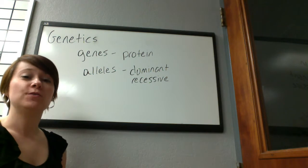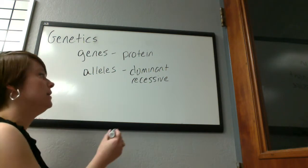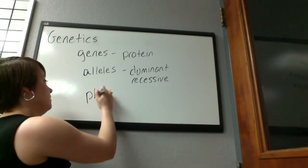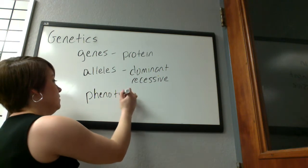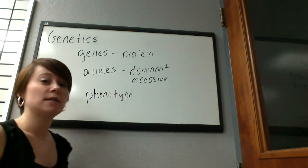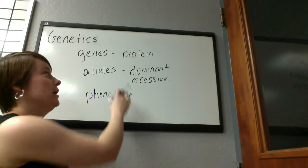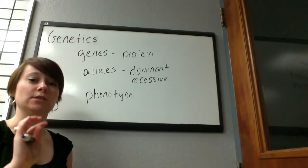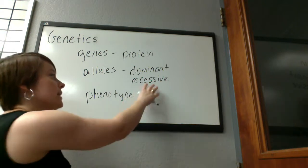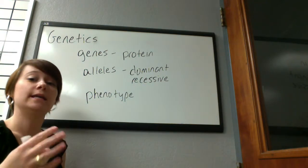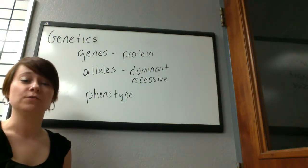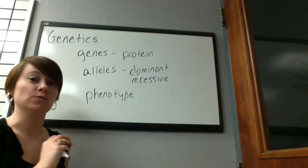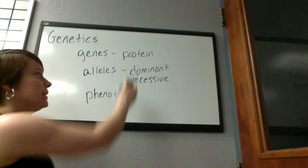When you look at a person — when you're looking at the physical characteristics of an individual — that is termed the phenotype. The phenotype of an individual is an expression of the dominant alleles that they have. The recessive alleles are there, they're just hidden. They're not going to manifest in the physical appearance of the person, because the dominant alleles will mask those recessive alleles. But they are both present.